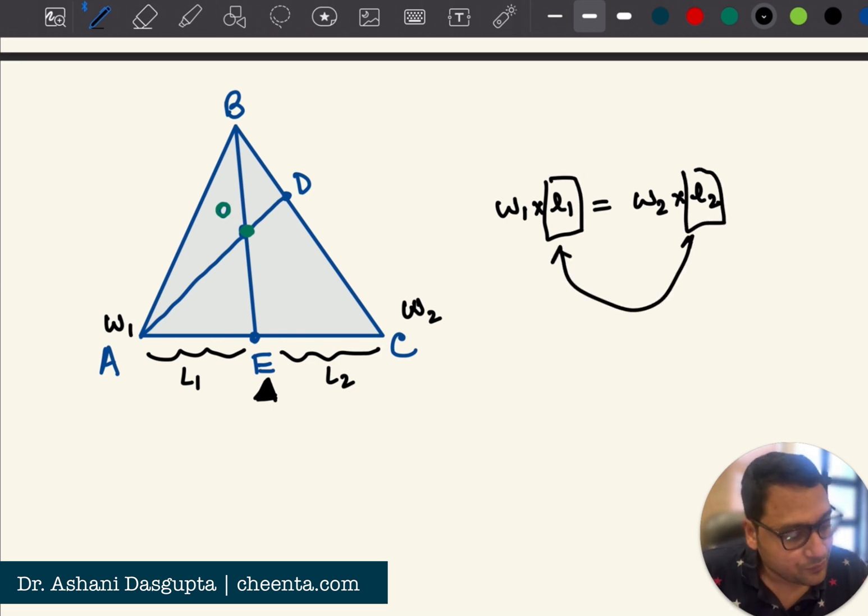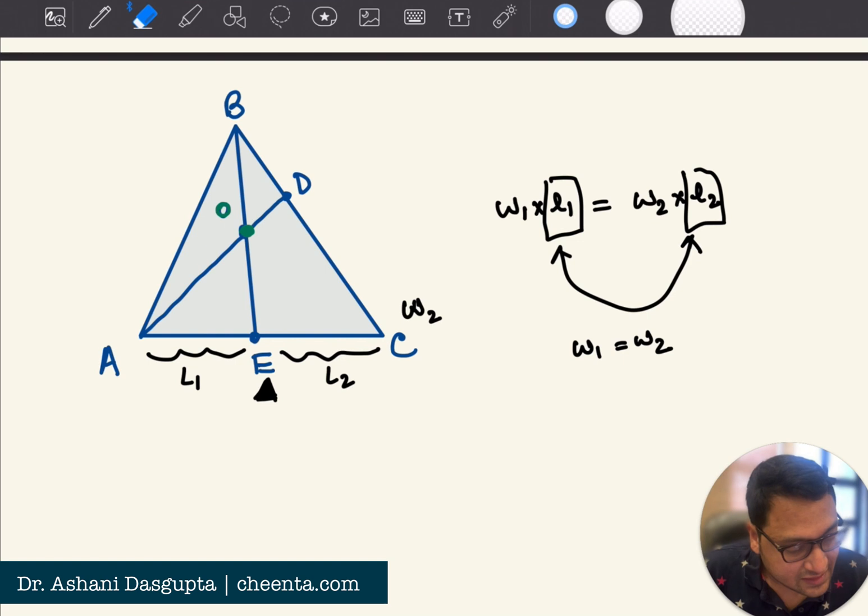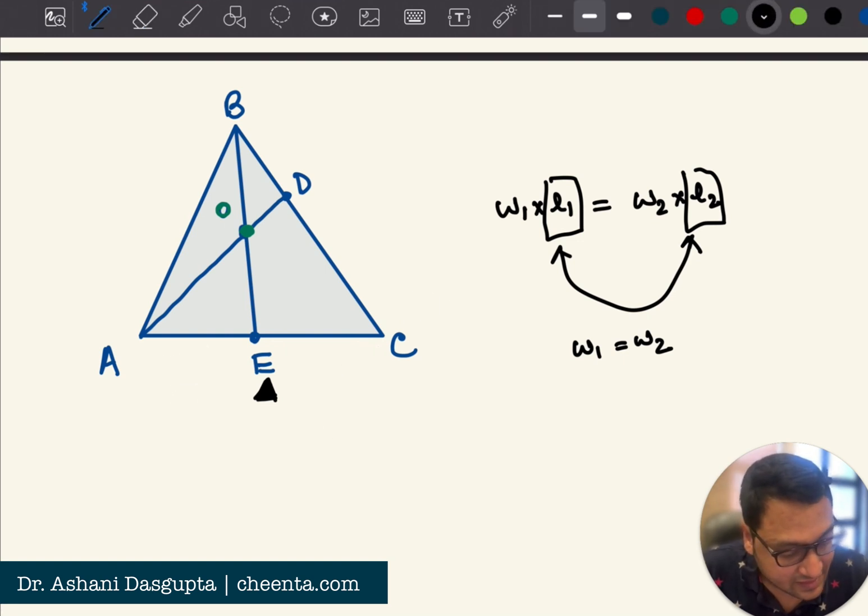they are equal, therefore, w1 is also equal to w2. The two weights must also be equal. So, let's put the weights x and x here. x here and x here.